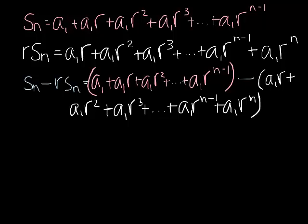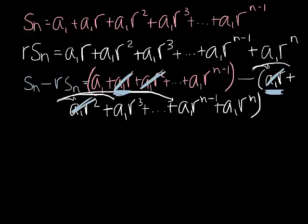Now, we should be distributing our negative all the way through to all these terms here. So hopefully you're noticing that this a sub 1 times r and this a sub 1 times r, those are going to cancel. Because I have this one here and I'm subtracting this. So that's going to cancel out. So will the a1 r squared, so will the a1 r cubed, and so on until I get a sub 1 r to the n minus 1 in here again.